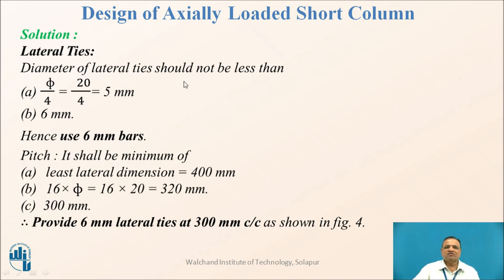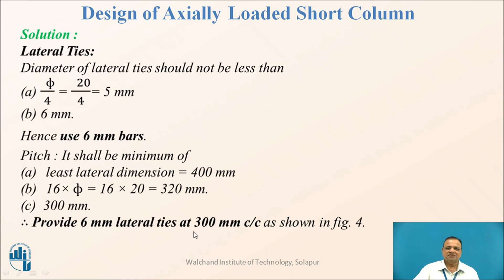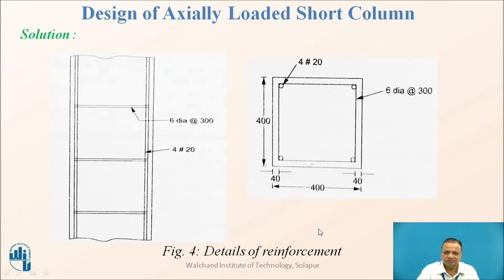For lateral ties, the diameter should not be less than bar diameter divided by 4, 5 mm, or 6 mm. Hence, use 6 mm bars. The pitch shall be the minimum of: least lateral dimension (400 mm), 16 times bar diameter (320 mm), or 300 mm. The least value is 300 mm. Therefore, provide 6 mm rectangular lateral ties at 300 mm center-to-center spacing, as shown in figure 4.